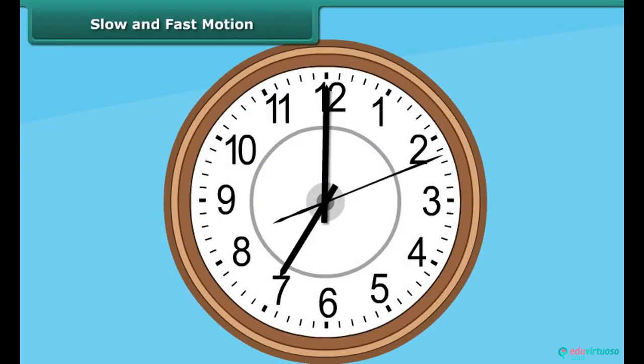Have you ever observed a wall clock? A simple wall clock or a wristwatch has a circular dial with three needles. The circular dial is divided into 12 equal parts with each division representing 5 minutes.